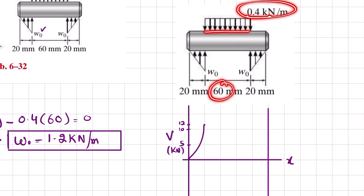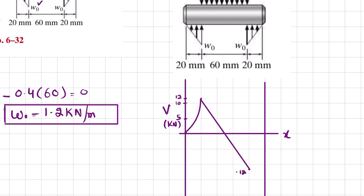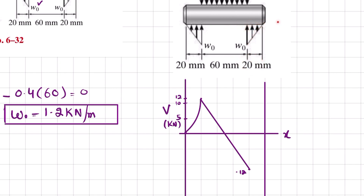The load of 0.4 × 60 = 24 brings the shear from +12 down: 12 − 24 = −12. So at the end of the middle region, shear is −12. Since the distributed load from bar C is uniform (zero degree), the shear force is a straight line (first degree). The final leaf load brings it back: −12 + 12 = 0. This final portion is again a curve.